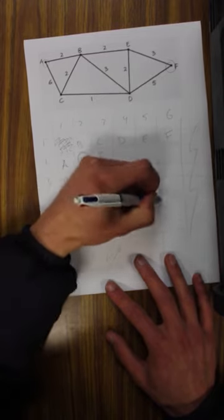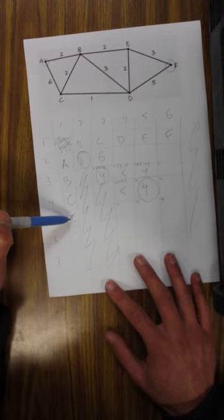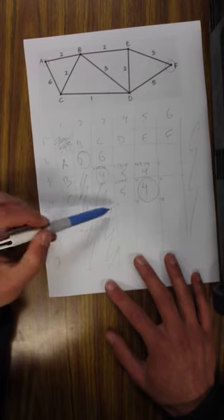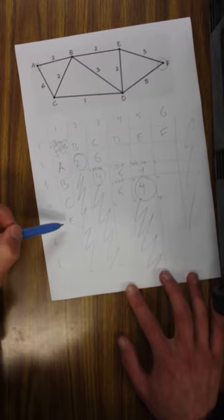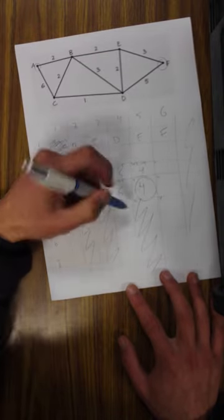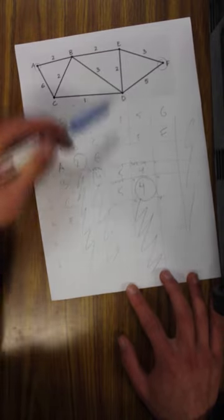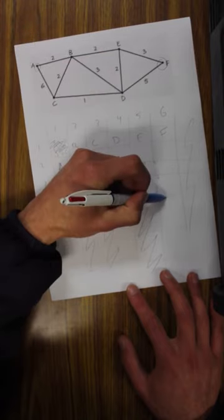Put our fours here so we don't forget. From E we can go to—circle and shade, don't forget to shade. From E we can go to D in two steps or we can go to F in three steps.